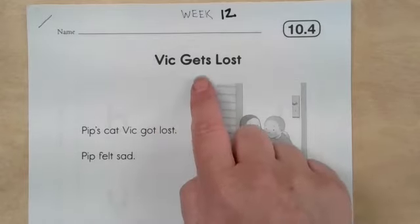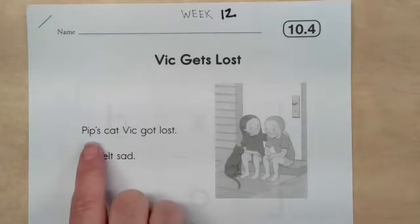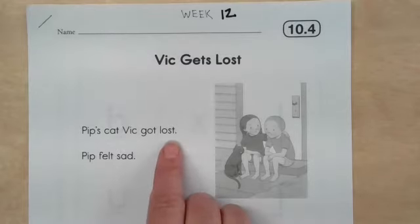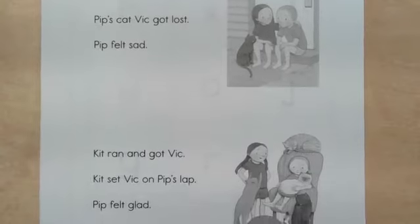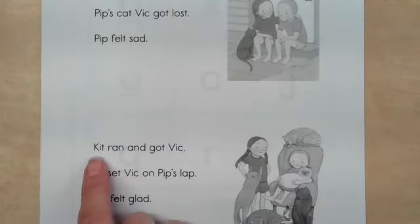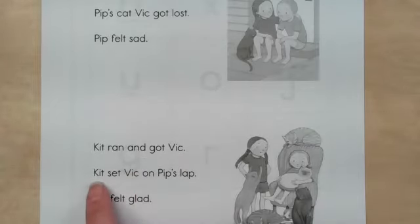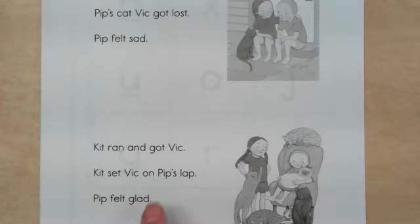Vic gets lost. Pip's cat Vic got lost. Pip felt sad. Kit ran and got Vic. Kit set Vic on Pip's lap. Pip felt glad.